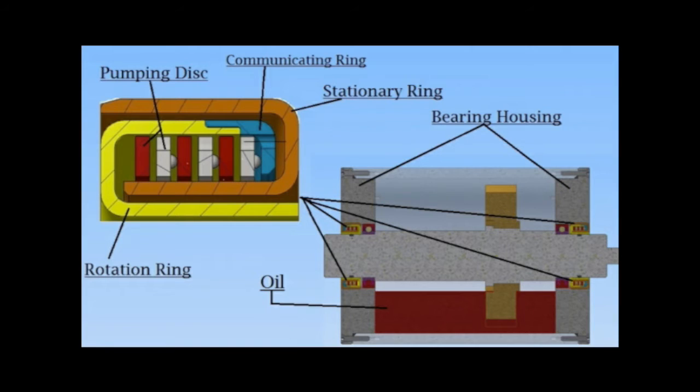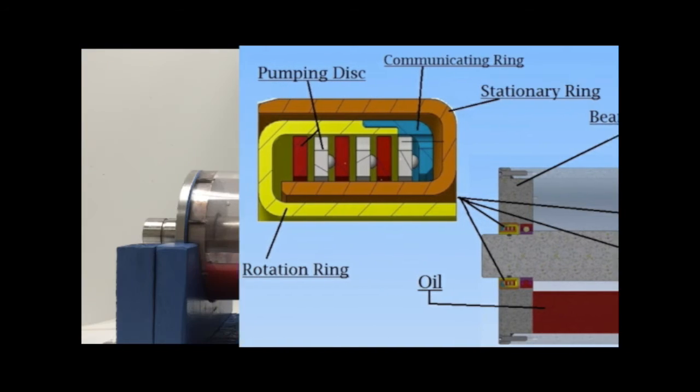The rotating ring is mounted to the shaft and rotates at the speed of the shaft. The communication ring resides between the stationary and rotating rings and is responsible for promoting the flow of lubricant throughout the seal cavity. Finally, the pumping discs are a series of thin floating discs that encourage laminar flow during sealing operation.